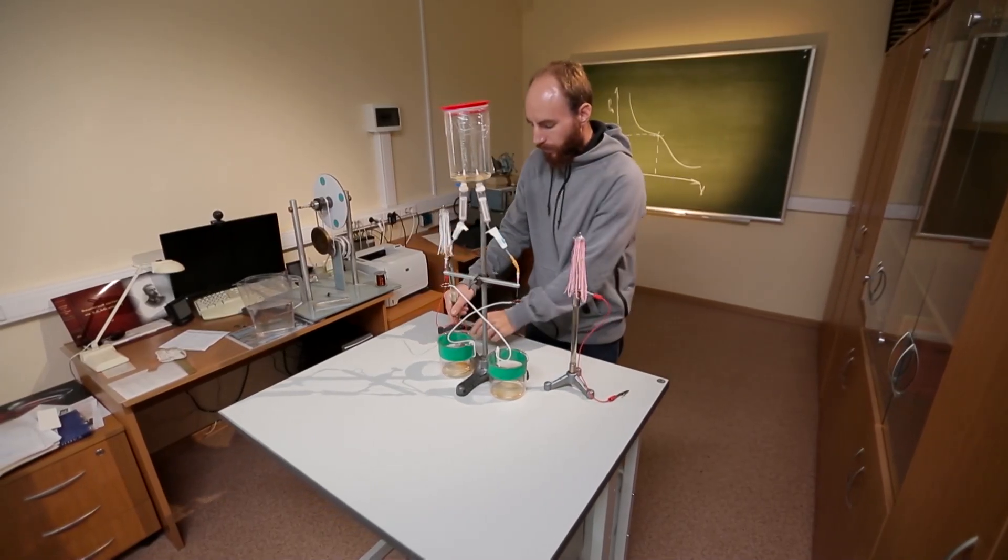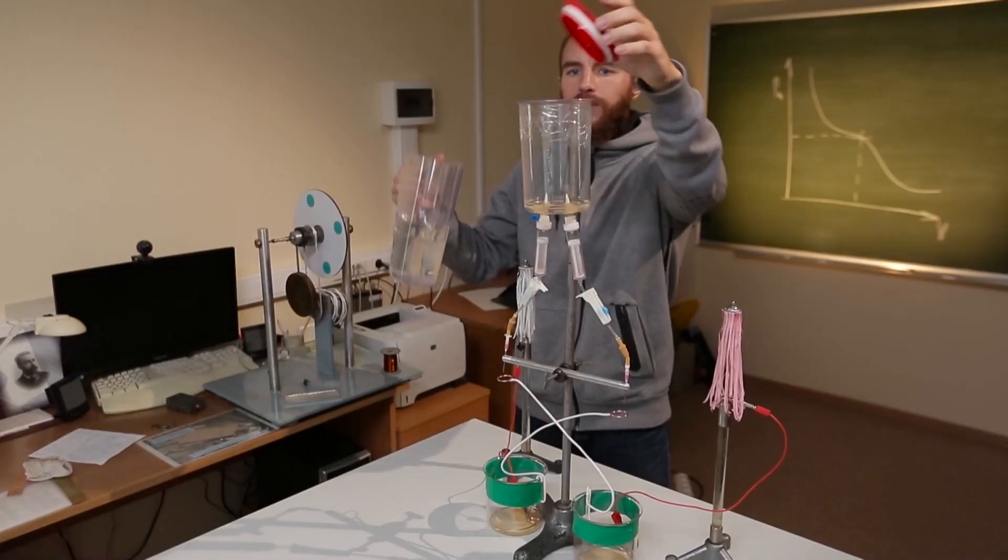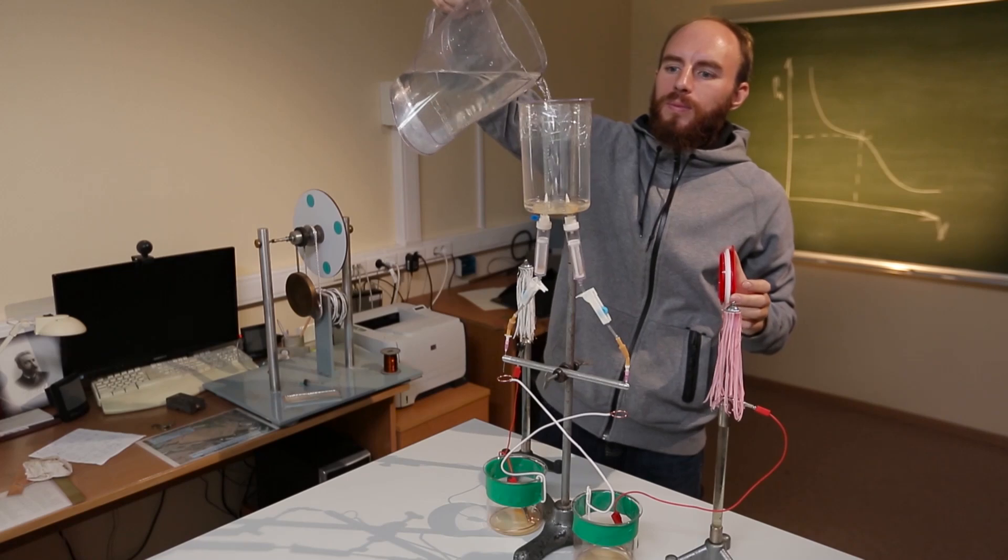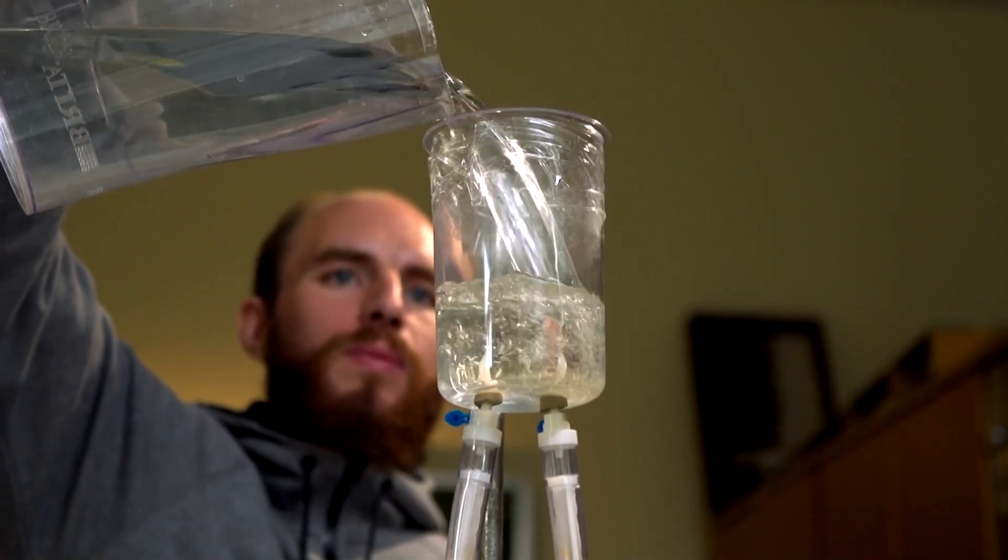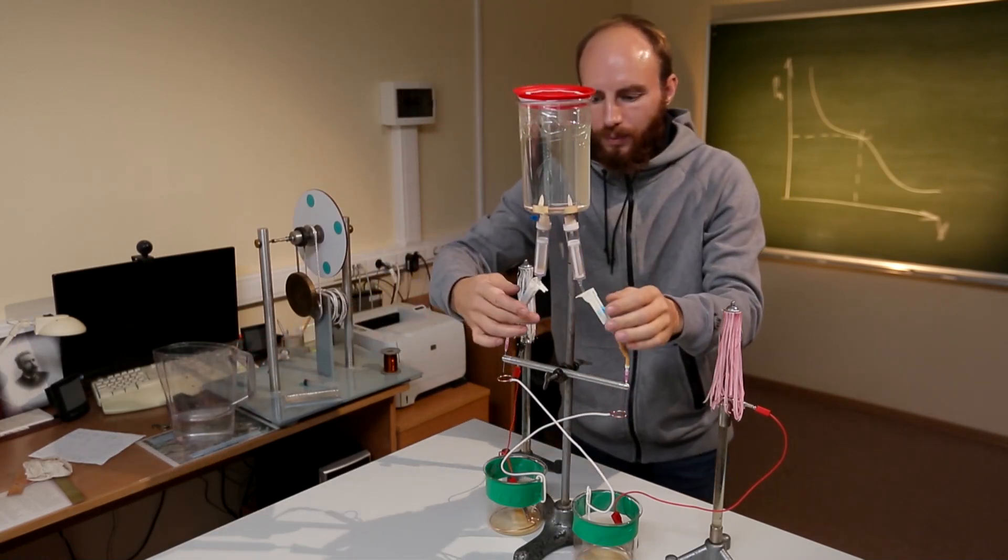We install a vessel with water on the stand. We put tubes crisscross through metal rings and connect the upper vessel to the lower ones with electrodes in them. This is called a Kelvin water dropper. We open the valve.